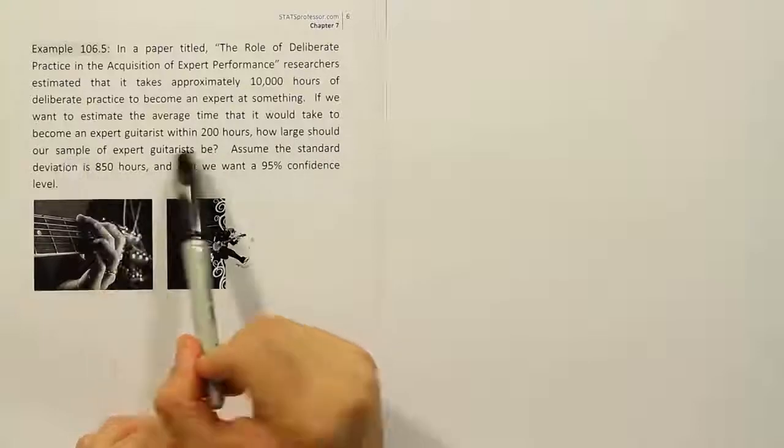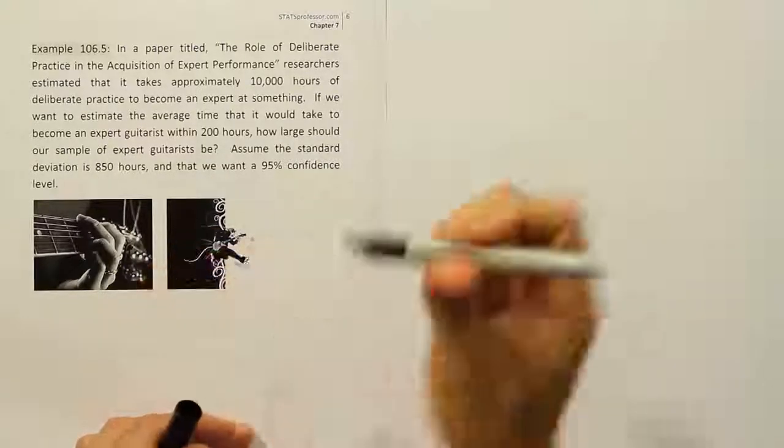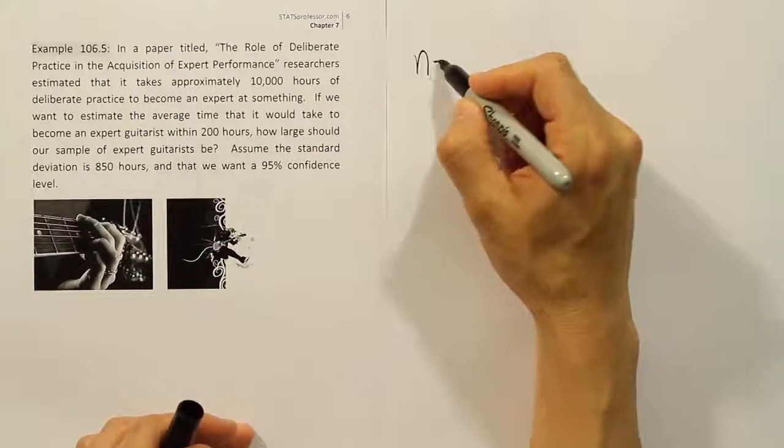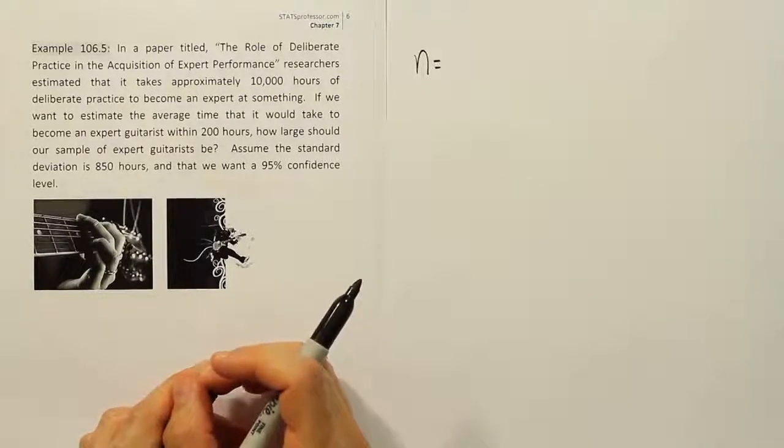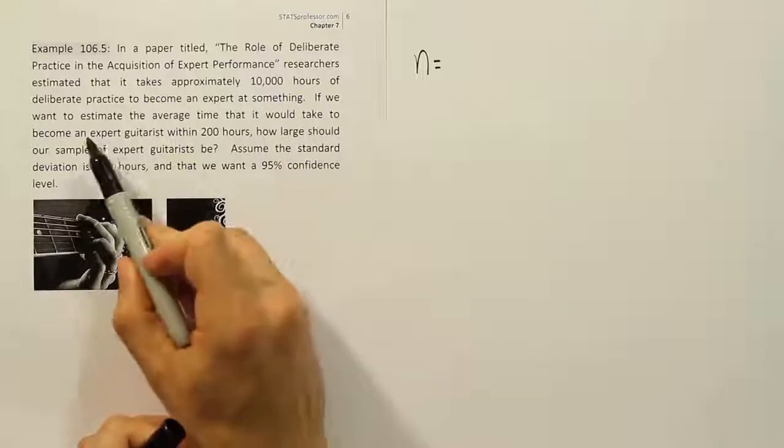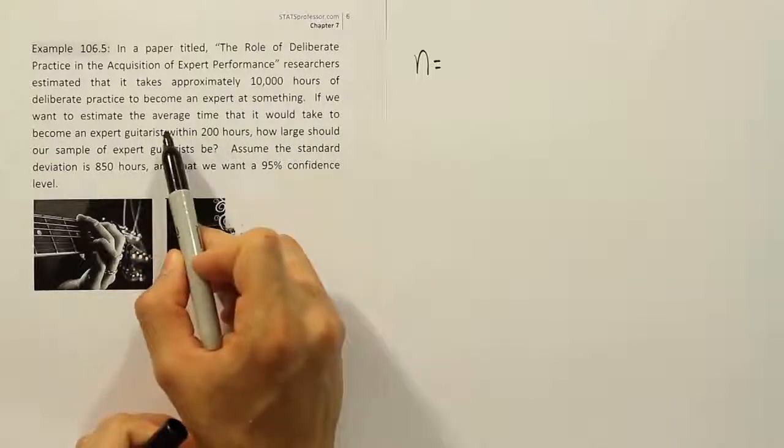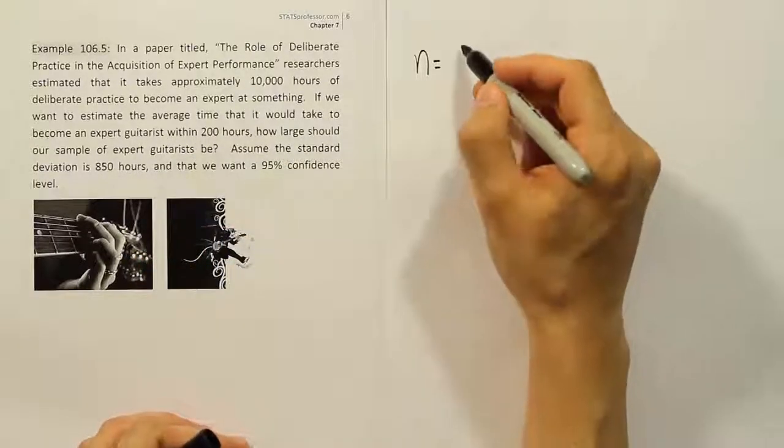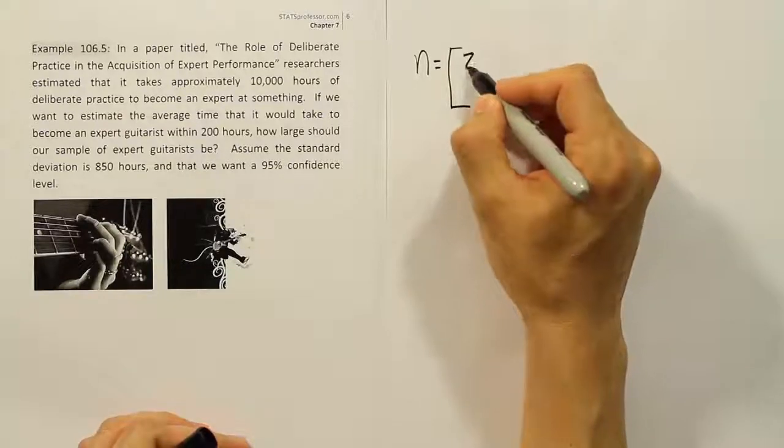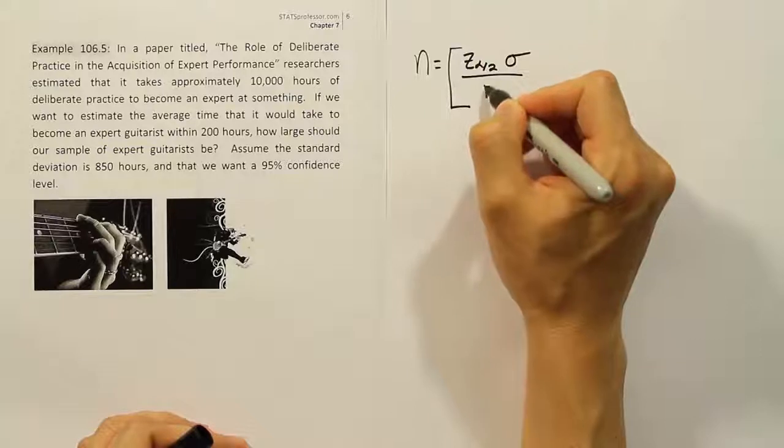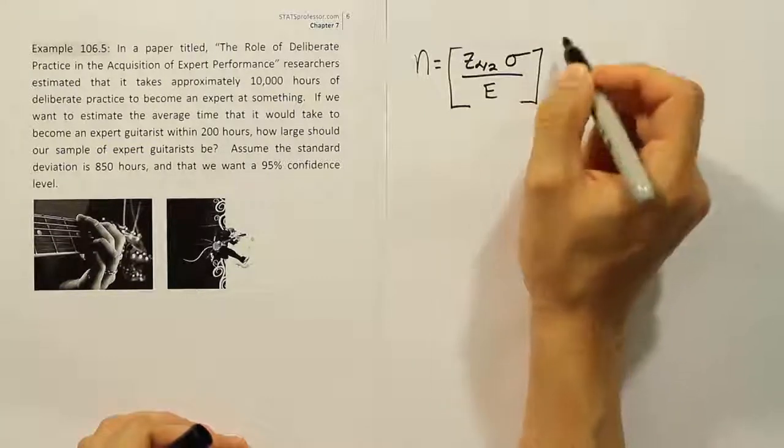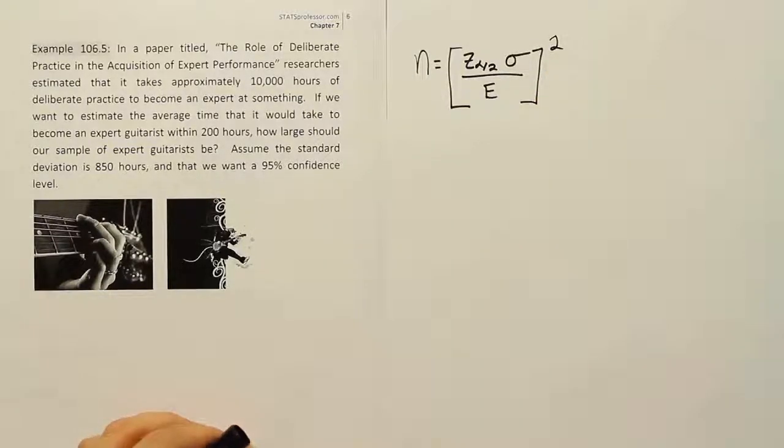How large should the sample be is a sample size question. So I know I need a sample size formula. The question is, is it for the mean or the proportion? When I read this phrase, it says we want to estimate the average time. Average time indicates we're dealing with the mean. So the formula is n equals (z_{α/2} × σ / E)².